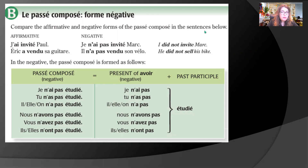Compare the affirmative and negative: j'ai invité Paul vs. je n'ai pas invité Marc. Eric a vendu sa guitare vs. il n'a pas vendu son vélo. The negative passé composé equals the present of avoir in the negative plus the past participle: je n'ai pas étudié, tu n'as pas étudié, il/elle/on n'a pas étudié, nous n'avons pas étudié, vous n'avez pas étudié, ils/elles n'ont pas étudié — they did not study.